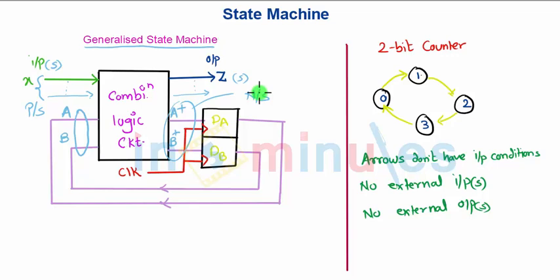Until now we have studied counters. Here is a 2-bit counter example, sequentially going from state 1 to 2, 2 to 3, 3 to 0, and 0 back to 1. In this sequential circuit, the arrows don't have input conditions like state machines do.